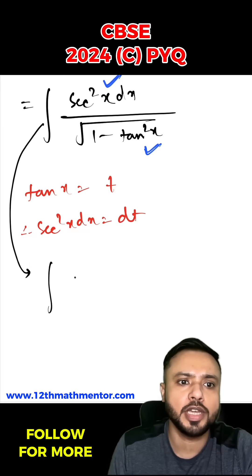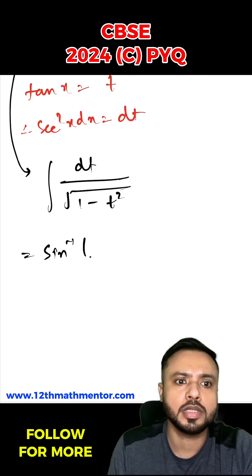So I can write the given integral in terms of t as dt by root of 1 minus t², which will be sin⁻¹(t) plus C, and then I will substitute back this value of t.